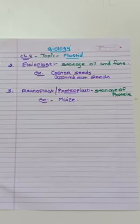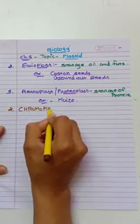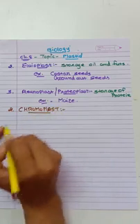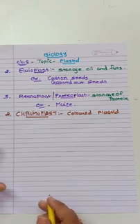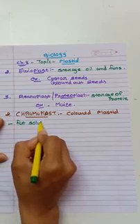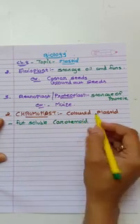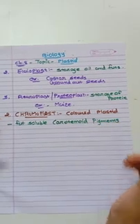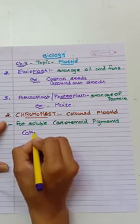Now we discuss about the second type of plastid and that is chromoplast. Chromoplasts are colored plastids. In chromoplast, fat-soluble pigments are present, like carotenoids and xanthophylls.